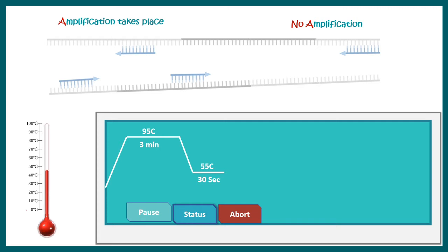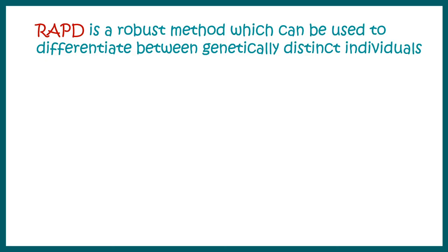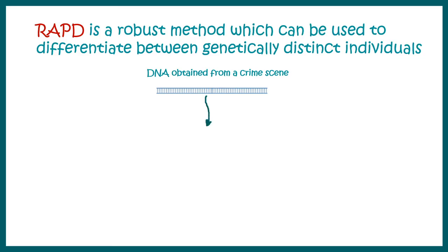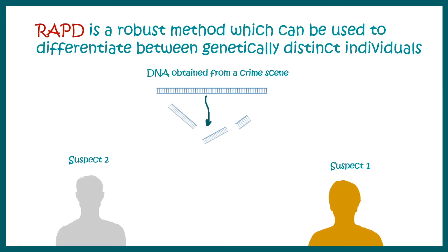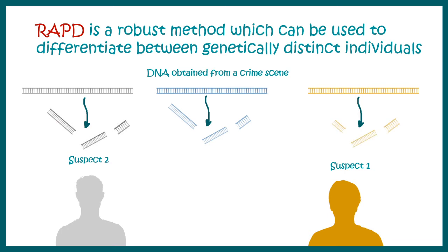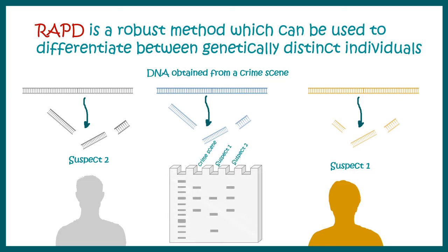To contextualize this: RAPD is a robust method that can differentiate between genetically distinct individuals. For example, DNA obtained from a crime scene can be compared against two prime suspects by performing RAPD on their DNA. Comparing RAPD profiles — if the crime scene DNA matches the profile of suspect two, that possibly identifies suspect two as the convict.